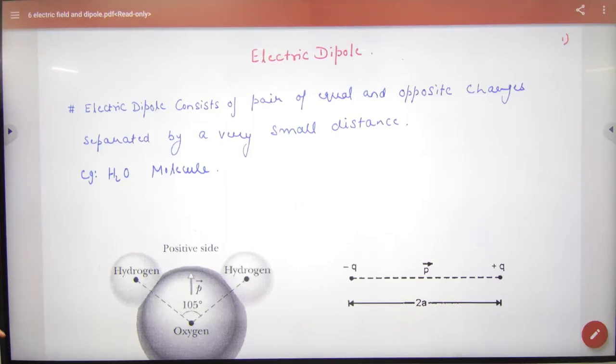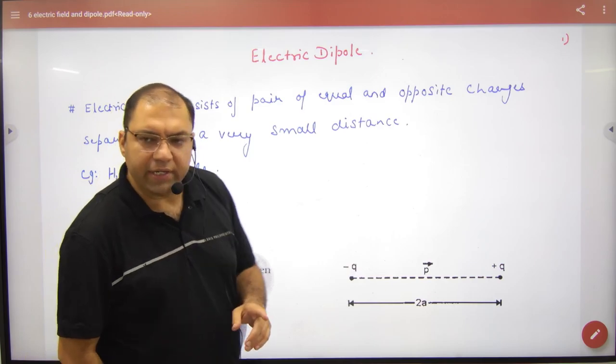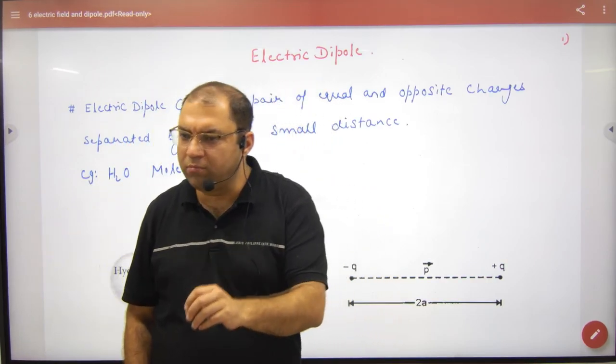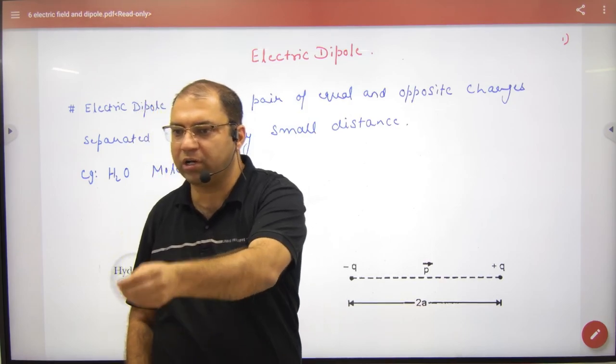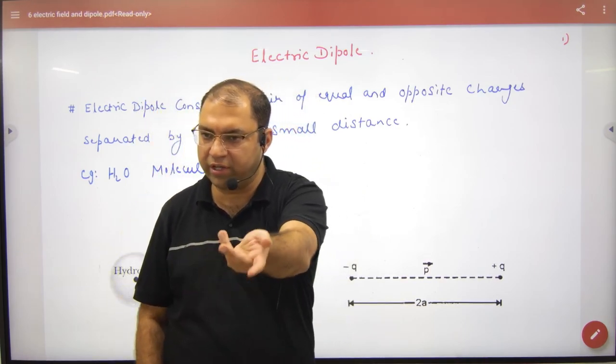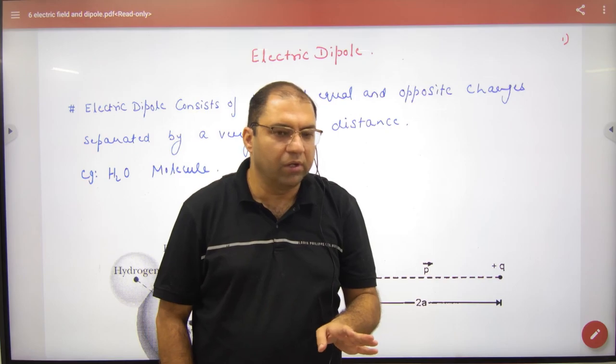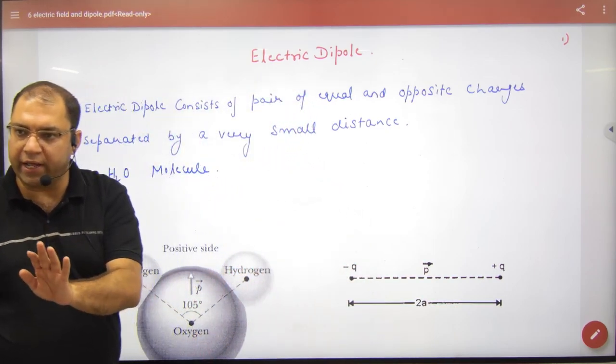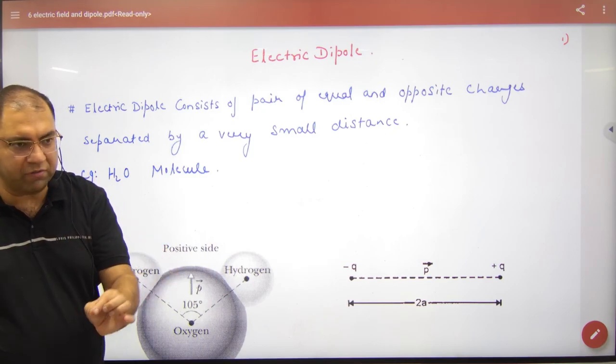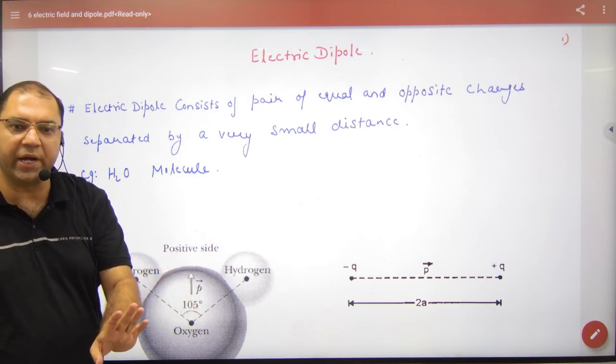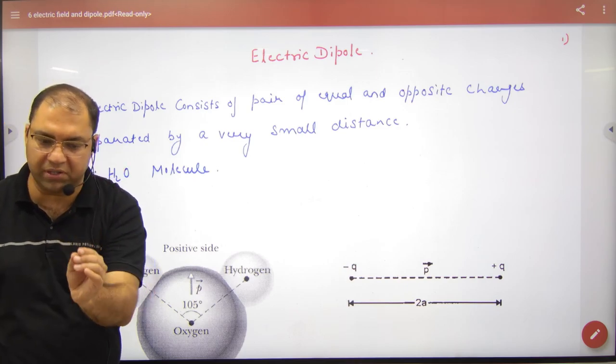Electric Dipole. Electric Dipole or Dipole Moment - in chemistry you have heard this term very commonly, Dipole Moment. Electric Dipole consists of positive and negative charges separated by a very small distance.